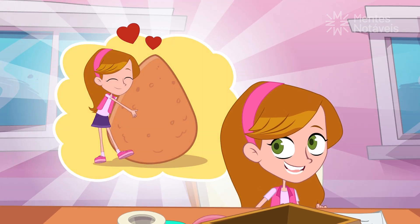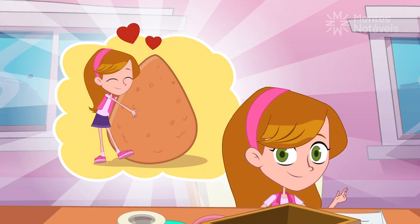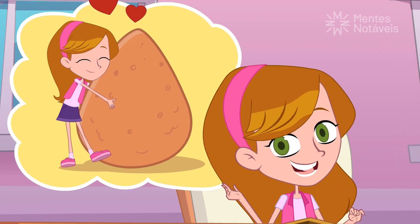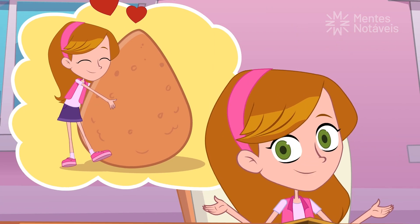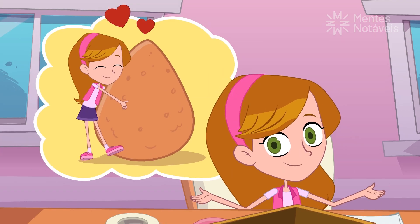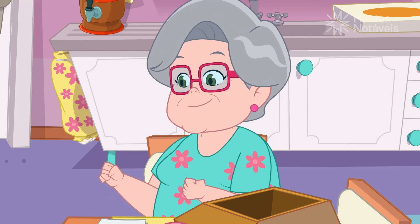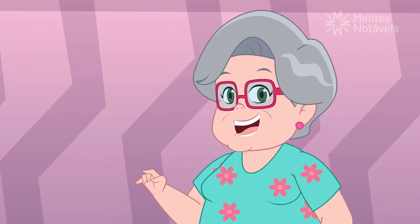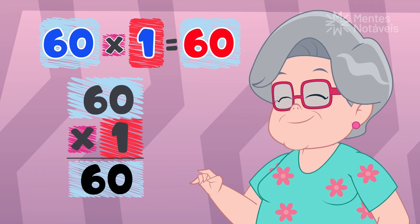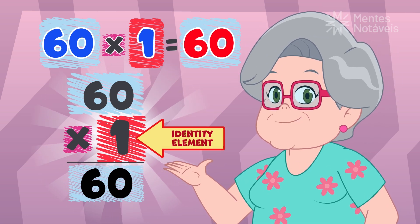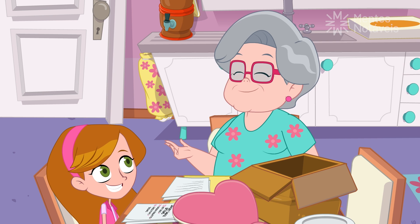If only the chicken croquettes were giant, then each person would only eat one. That way, we wouldn't need to do the math, because any number times one is always itself. I love it! My little Sophia is rocking math. That's right, dear. The number one is the multiplicative identity element. You explained that property perfectly.